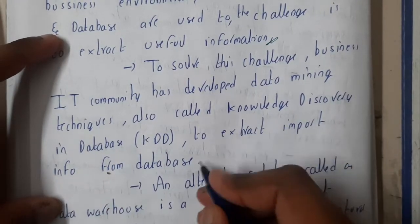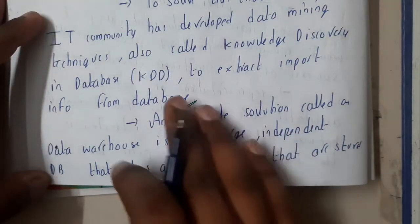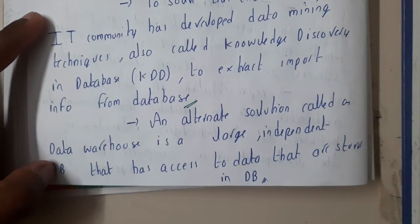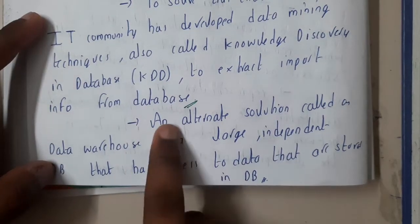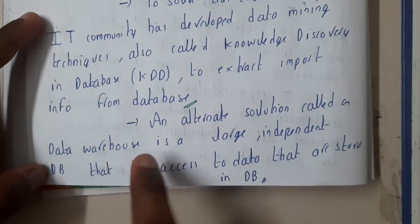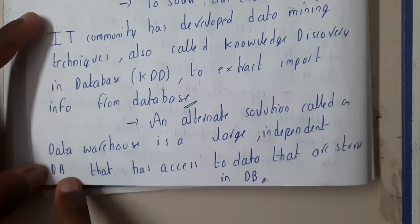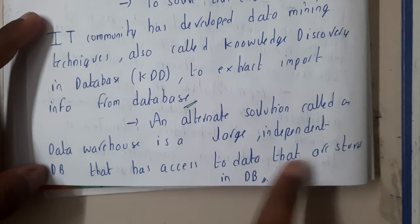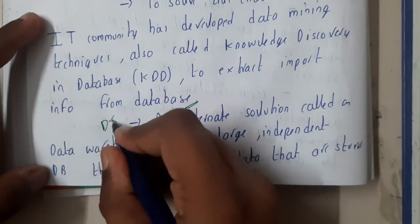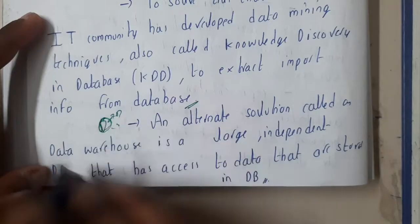KDD is used to extract or import only the required data from a database — no unwanted or waste data. An alternative solution is called a data warehouse, which is a large independent database that has access to many smaller databases. The data warehouse stores everything and has connections to all those smaller databases.